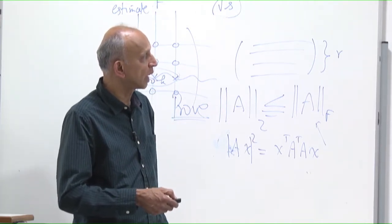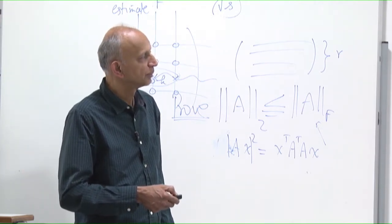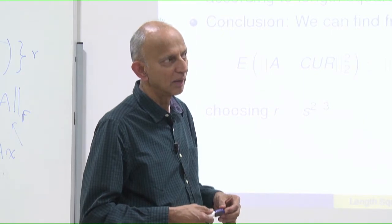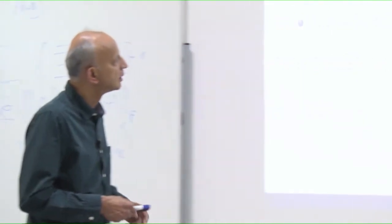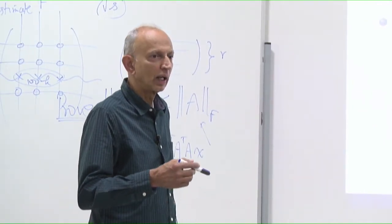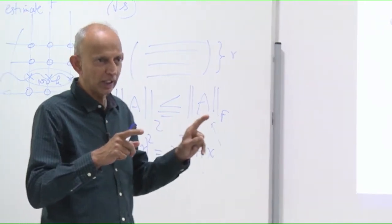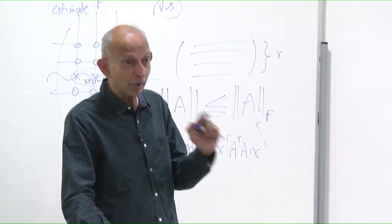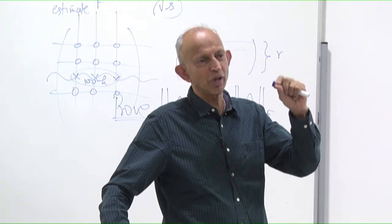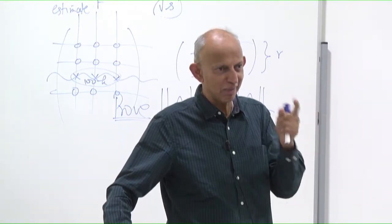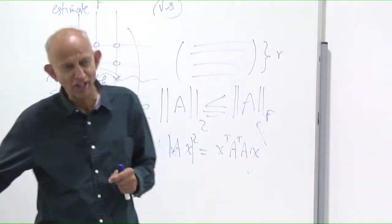How would you improve this? If you fixed the number of columns, then length squared is optimal in some sense. Length squared is optimal once you've fixed the number of samples you take. There are also later methods that do adaptive sampling. Length squared picks one vector with probability proportional to length squared. You could instead pick pairs of vectors with probability proportional to the area of the triangle spanned — length squared is a one-dimensional measure. You can pick pairs with probability proportional to area squared, or three-tuples with probability proportional to the volume squared. This is called determinantal process volume sampling, which gives much better results.